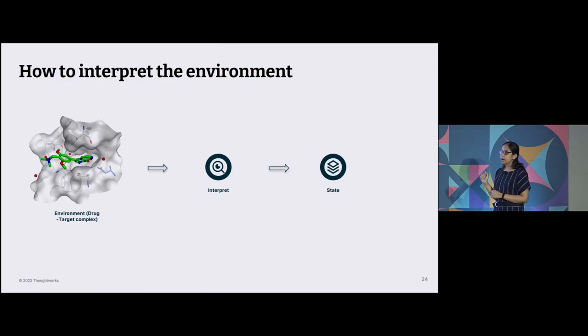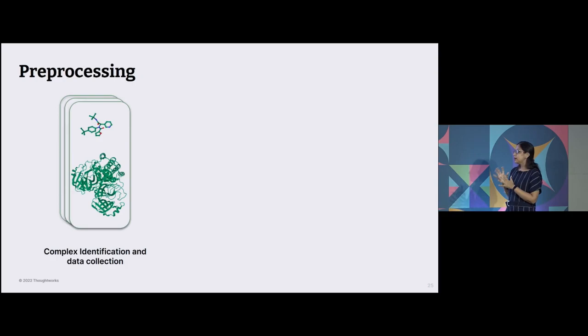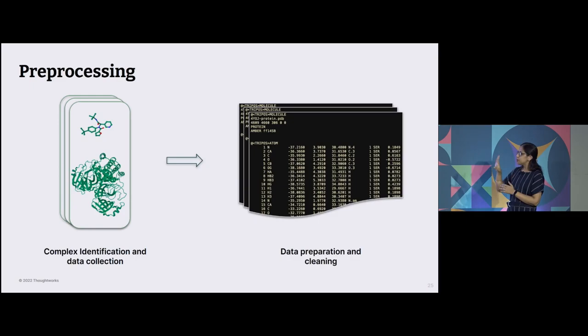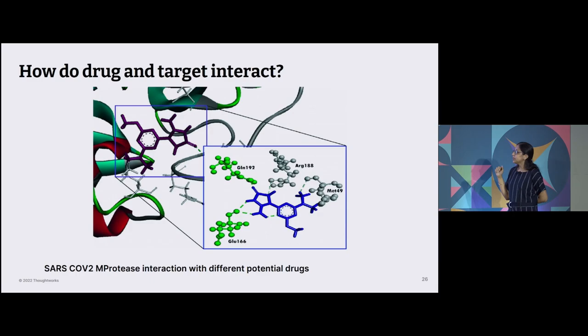So now that we have created a specialized environment for our RL agent, the next step is to interpret that environment, make it understandable for the algorithms so that we can create some common representations. For that, we first need to get the data. We've been talking about the drug target complexes. Where does this complex data come from? So there are public repositories where the experimental data is available. So we picked up relevant experimental data from the repository, and then representing them. These are the flat file formats from where you can get it. And they have all the information like how it is distributed, what kind of interactions it has, how are the spatial coordinates, and other information. While we are talking about the interactions, how do they really interact? How have we been saying that the drug goes and binds to the target? How does that really happen?